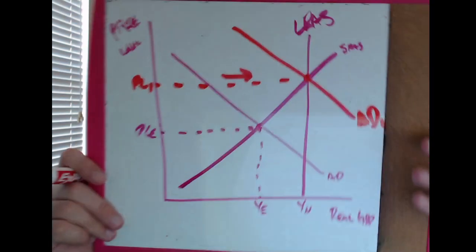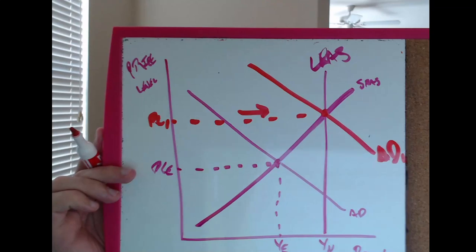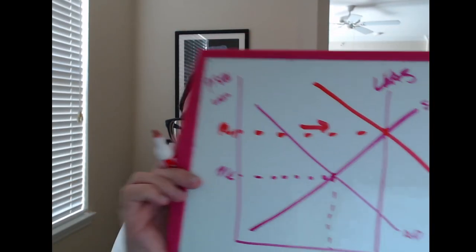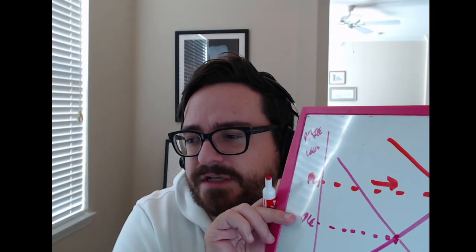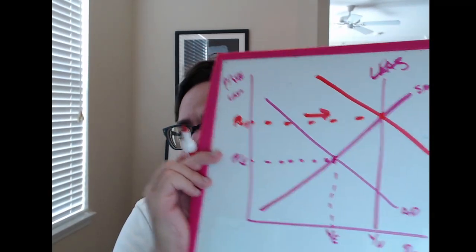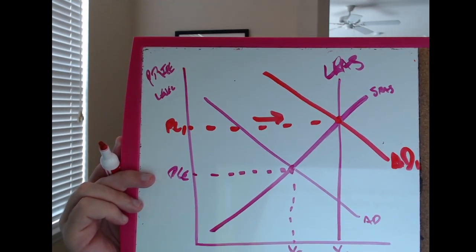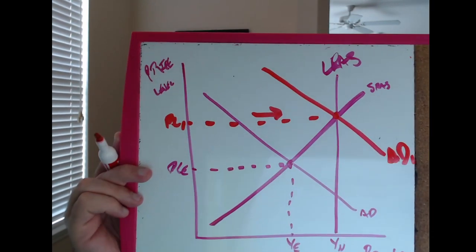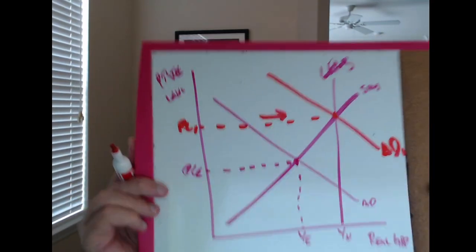The question says: what happens if the government increases spending to get the economy out of the recession? Government spending is a type of spending, which means it's an aggregate demand shift — more government spending means more aggregate demand. If the government increases aggregate demand by enough, we can get back to long-run equilibrium. We'll have a higher price level, but in the long run prices and wages adjust, so ideally that's fine.